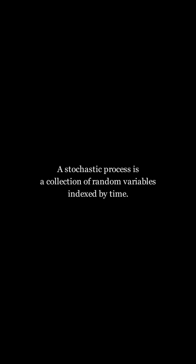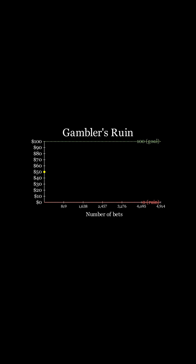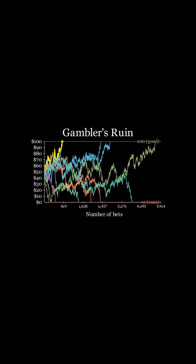A stochastic process is a collection of random variables indexed by time. We can use the famous example of gambler's ruin to illustrate a stochastic process.